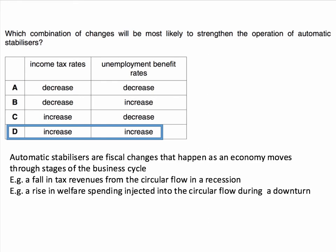Automatic stabilisers are fiscal changes that tend to happen automatically as an economy moves through different stages of the economic cycle or the business cycle. For example, if an economy goes into a recession — unemployment falling, real incomes contracting — then the government takes out of the circular flow less in the form of tax, and that helps to stabilise demand. Equally, during a downturn or recession, the government is injecting more welfare into the economy, which also helps to stabilise demand, money in people's pockets, and helps to stabilise confidence.